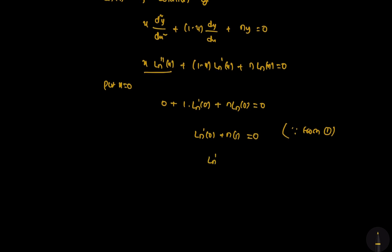So L_n'(0) = -n. This proves it. In this class, we have discussed the orthogonal property of Laguerre polynomials. All the best and thank you.